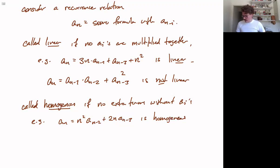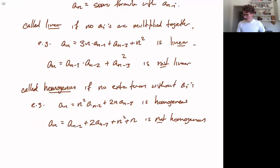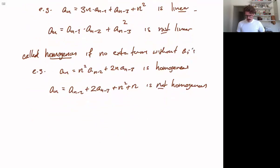As opposed to, for example, an equals an minus 2 plus 2 an minus 3 plus n squared plus n. This is not homogeneous. Because this part does not have any ai's in it. So that is the part that is not homogeneous. And we will deal with non-homogeneous equations, but I think we will not make it there today. That will be for our next time.